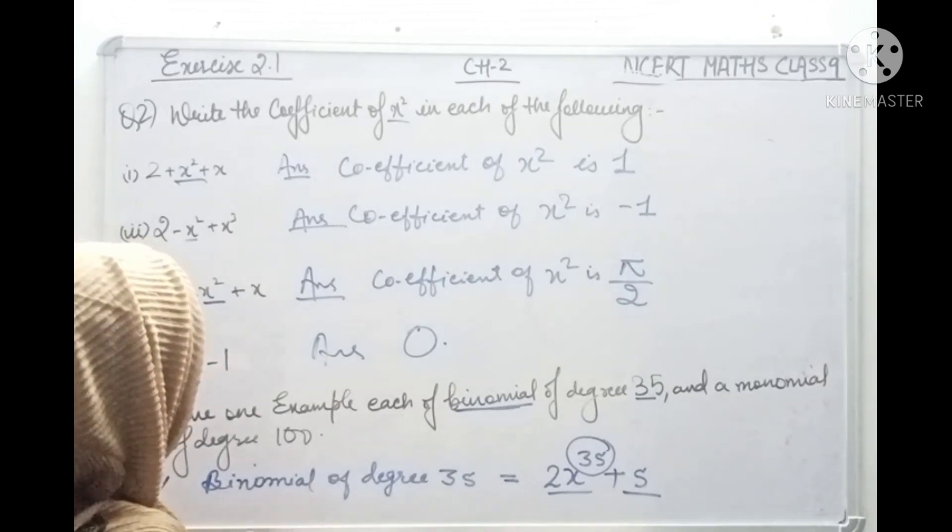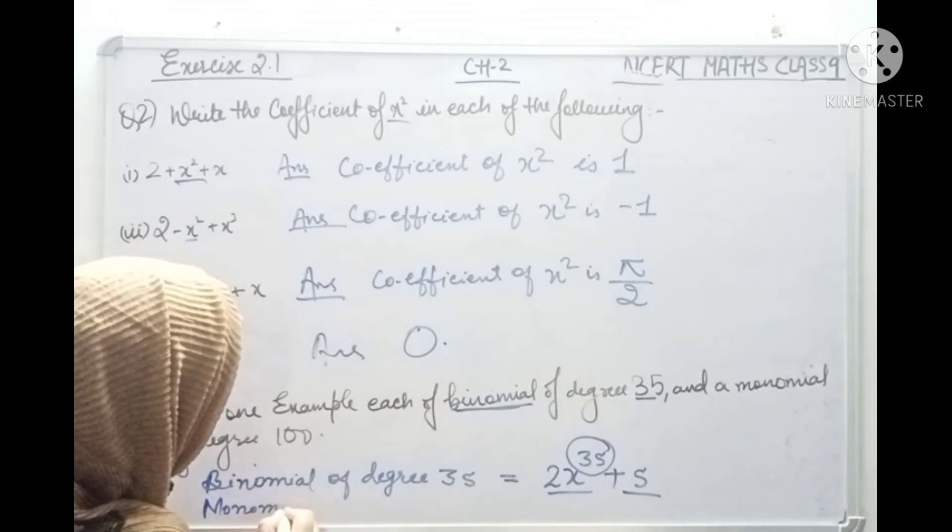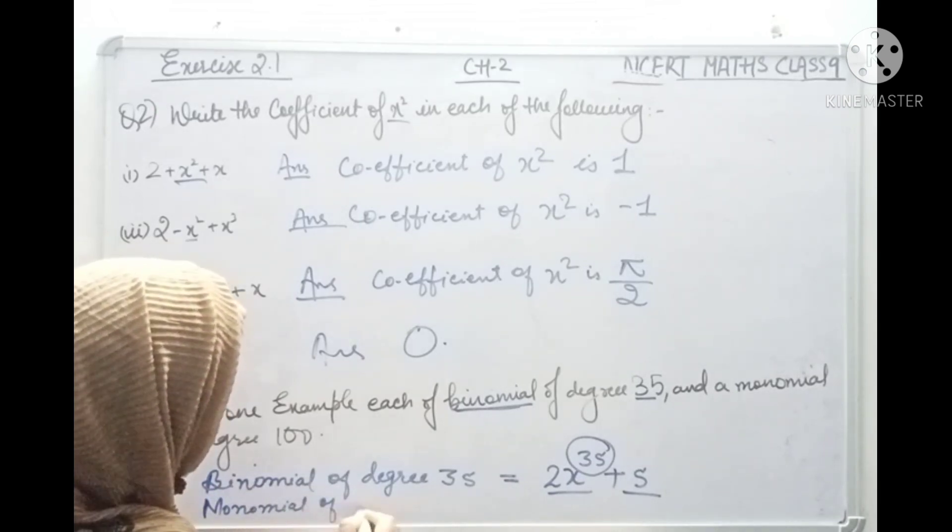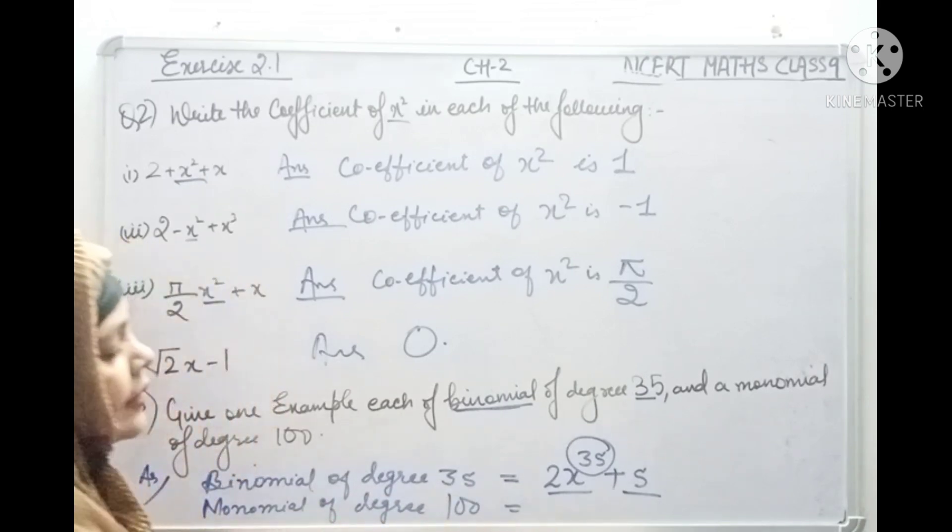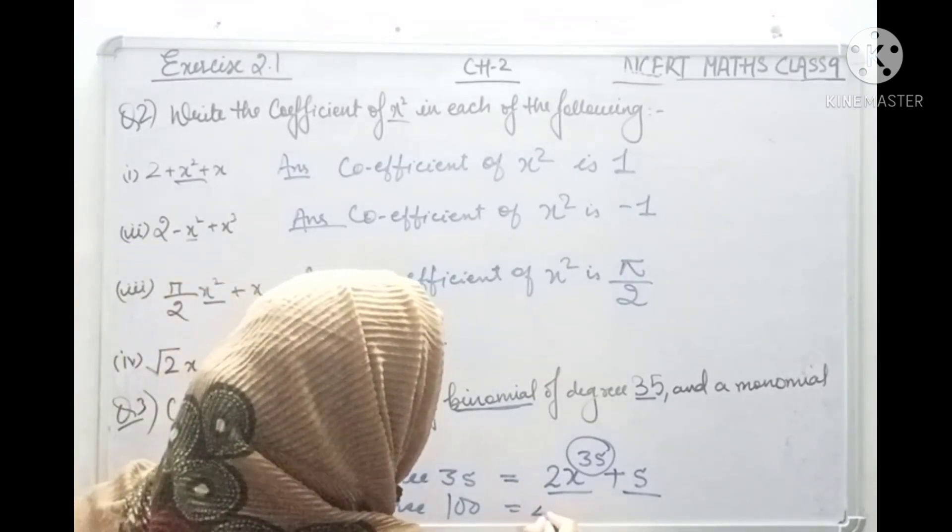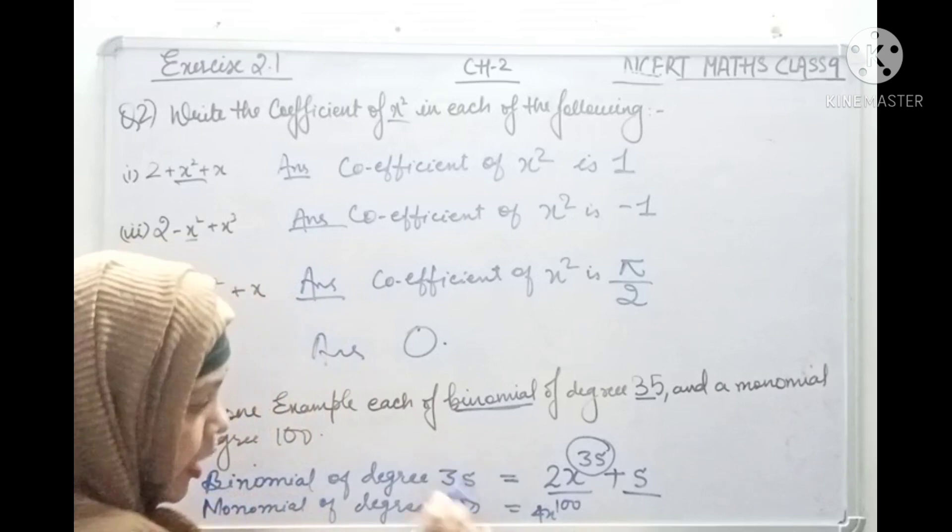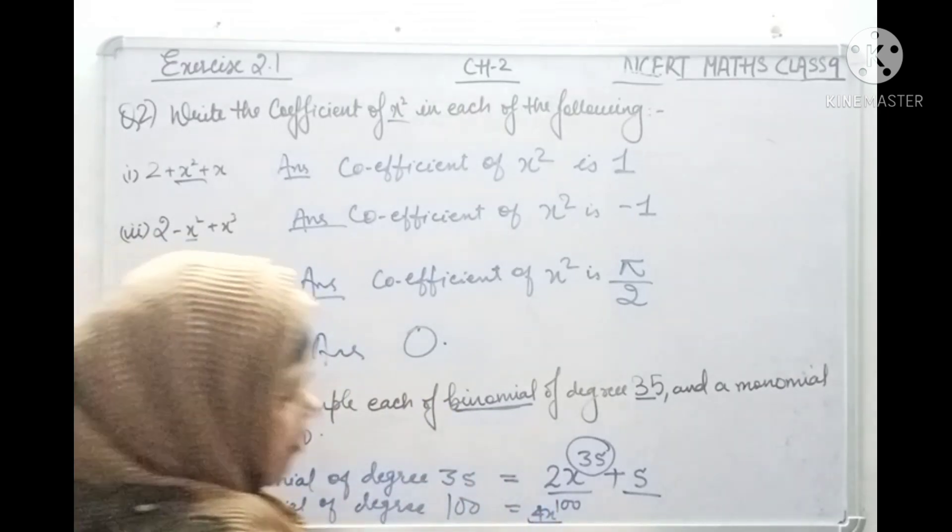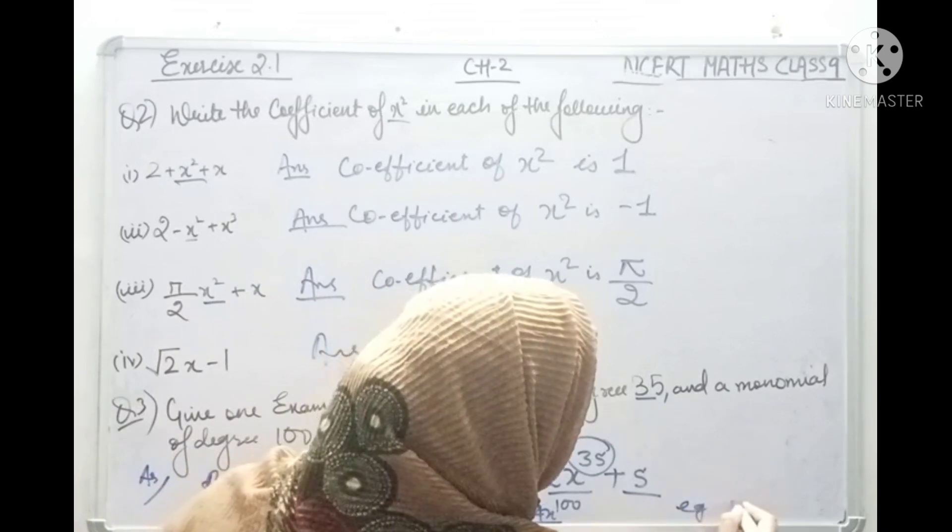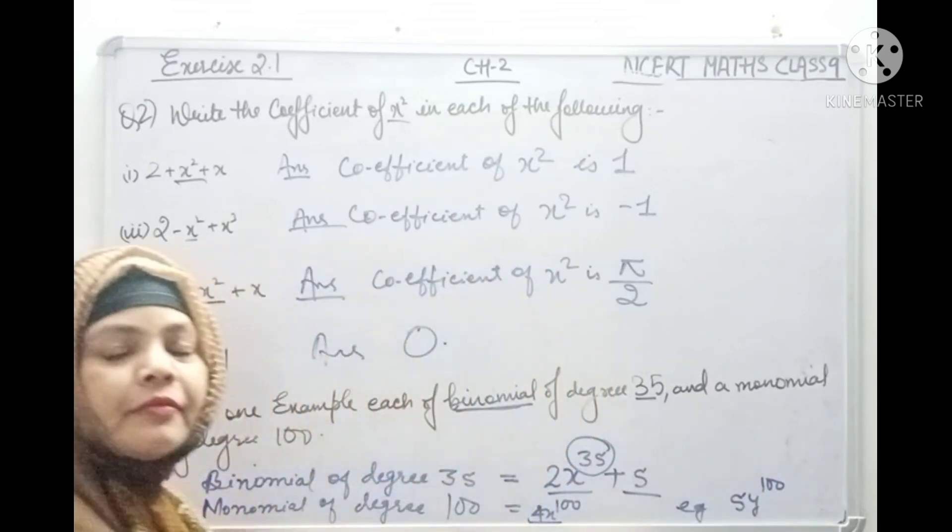Monomial of degree 100. You can write 4x to power 100, because here we have 1 term. And here we have another example, 5y to power 100.